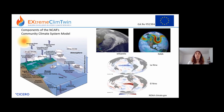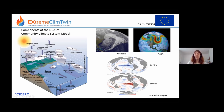We also expect climate models to be able to simulate weather phenomena and climate phenomena, like depressions and the jet stream, and major variability like the El Niño Southern Oscillation, which has to do with sea surface temperatures in the Pacific.